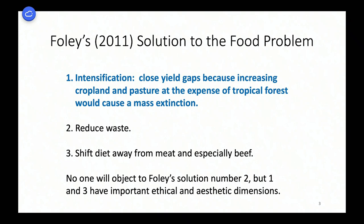Foley's solutions to the food problem include intensification — closing yield gaps. One reason you need to do that is that increasing crop land and pasture at the expense of tropical forests would cause a mass extinction and a gigantic carbon emission from deforestation. Intensification is primarily by increasing rates of fertilizer and pesticide application. Second is reduce waste. Third is shift the diet away from meat, especially beef. No one objects to solution number two — we all want to reduce waste. But solutions one and three have important ethical and aesthetic dimensions.